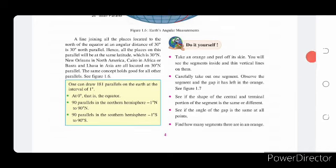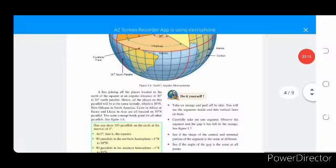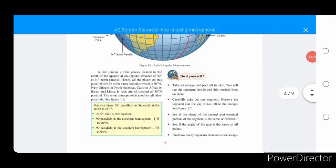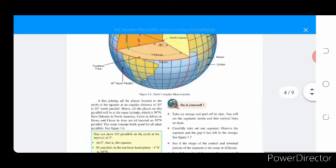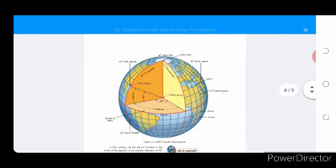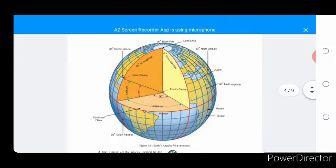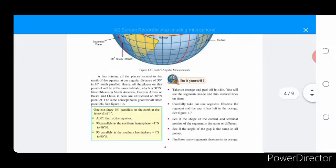One can draw 181 parallels on the earth at the interval of 1 degree. Point 1 at 0 degrees, that is the equator. 90 parallels in the northern hemisphere, 1 degree north to 90 degrees north. 90 parallels in the southern hemisphere, 1 degree south to 90 degrees south. Do it yourself.